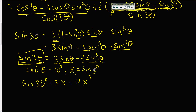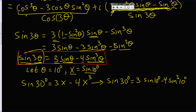Now remember, sine of 10 degrees is a solution. If I replace x with sine of 10 degrees, I'll have sine of 30 degrees on the left, and on the right 3 times sine of 10 degrees minus 4 times sine cubed of 10 degrees. But this is just what this says — it's an identity, true for any angle including 10 degrees.